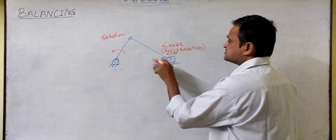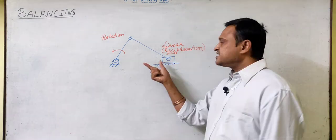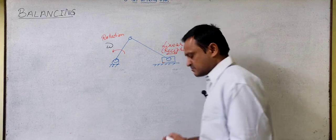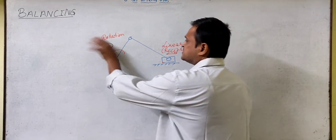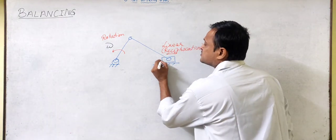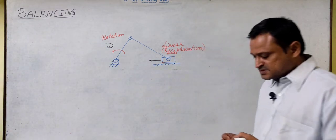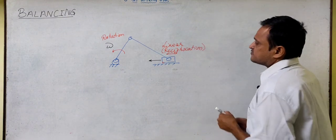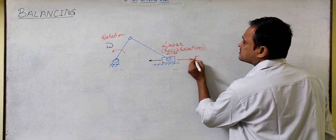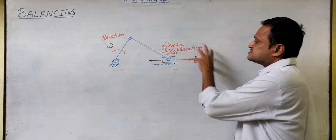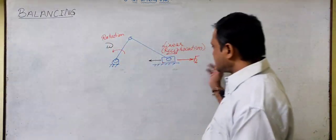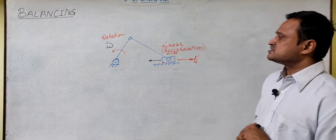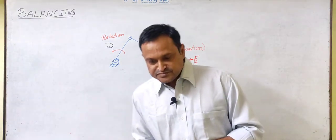Now let us talk about the reciprocating component. This slider is having a linear motion, and when this is rotating with some angular velocity omega — turning counter clockwise — at this instant the slider will be moving towards the centre of rotation of the crank. When this is moving in this direction the inertia force will be acting exactly opposite to it. This inertia force is acting along the line of the stroke, creating unbalance in the system, and at times it becomes very disturbing when the system is rotating at quite high speed.